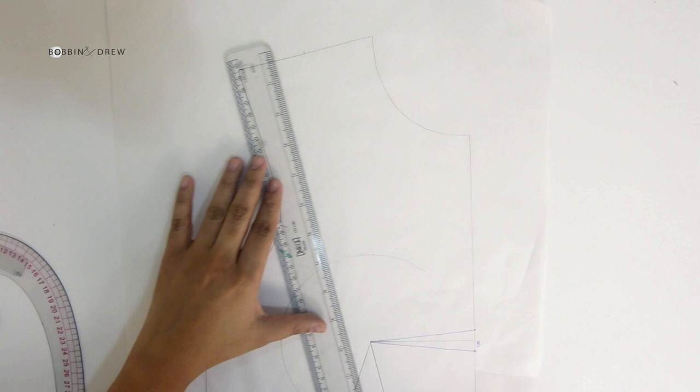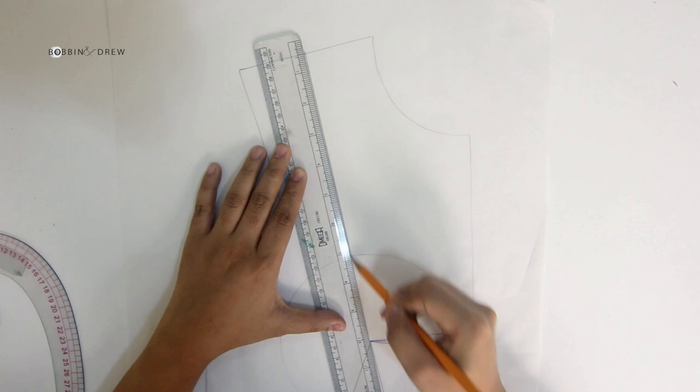Contour guide number six is to remove any excess above the bust for all strapless designs. Draw that line from the mid shoulder to the bust point.